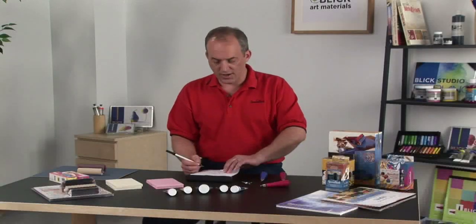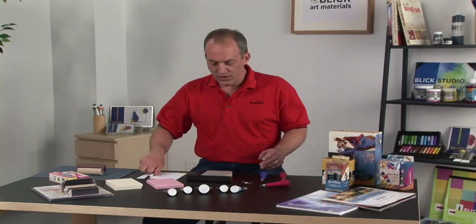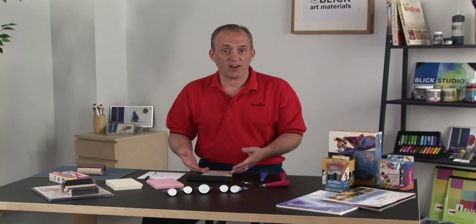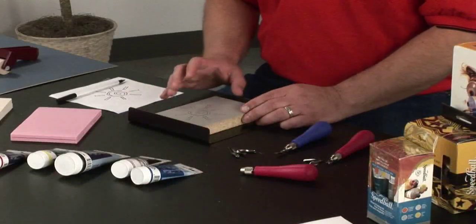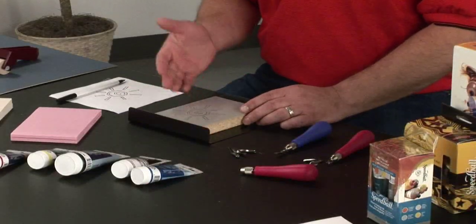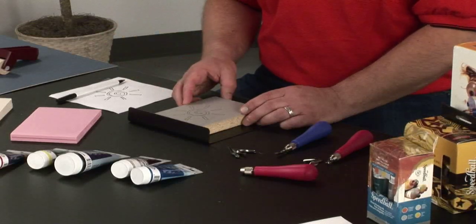Once you've finished transferring your image, it's time to start cutting. When you begin cutting your block, you need to determine what images you actually want to print. The material that you cut away will not print, and everything that you leave on the block will actually print onto your printing paper. It's also important to keep in mind that if you're printing letters or numbers, you'll want to transfer those in reverse image.